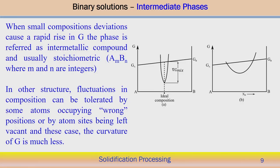When small composition deviations cause a rapid rise in G, that means the change in Gibbs free energy is very drastic over a small variation in composition — this is referred to as an intermetallic compound, which usually follows a fixed ratio in the form A_M B_N where M and N are integers. In other structures, fractions of the composition can be tolerated by atoms occupying wrong positions or by atom sites being left vacant — in this case the curvature is much less. Over a range of composition, stability may exist to form an intermetallic compound.